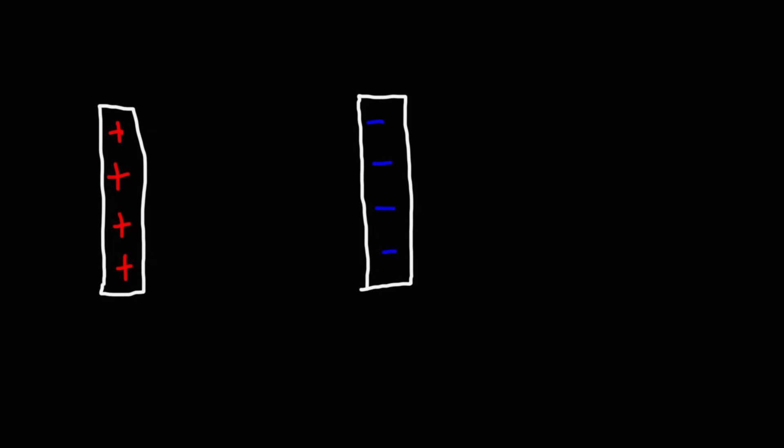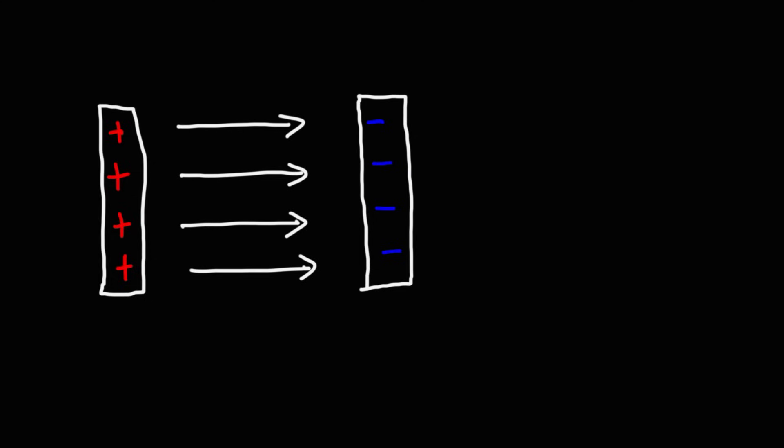Now let's talk about parallel plates. With a positively charged plate and a negatively charged plate, the electric field lines go away from the positive plate and toward the negative plate. In the interior between the two plates, the field lines are relatively constant and straight. At the edges they bulge outward a bit, but in the middle the field is uniform.